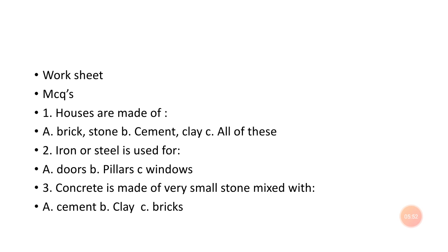Number three: concrete is made of very small stones mixed with — option A: cement; option B: clay; option C: bricks. Concrete is a mixture of cement, sand, and small stones. It is used in our roofs and floors. So option A — cement — is correct.